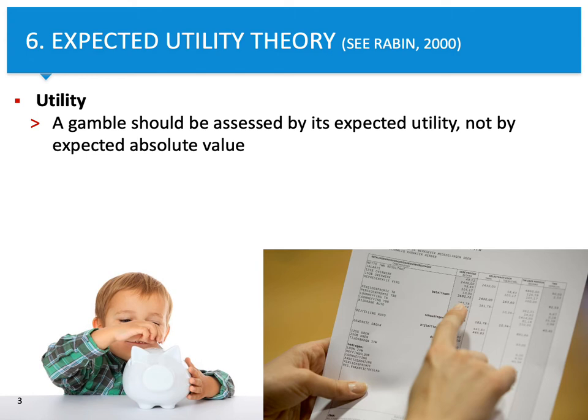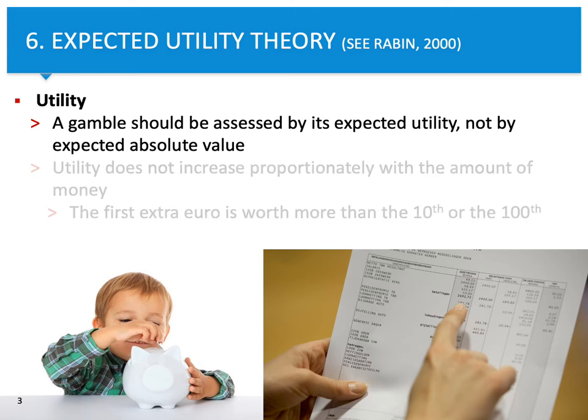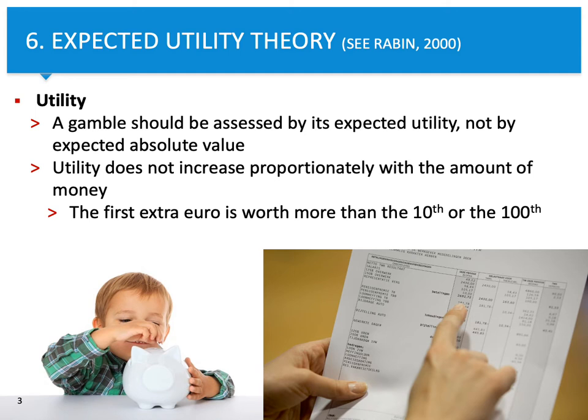When we consider gambles, we talk about expected utility, not absolute value. It's related to the fact that there are some specific differences in terms of utility between getting 1 euro or the 10th or the 100th. If you have nothing, getting 1 euro can more heavily increase utility than getting the next 10 or next 100. That's the way how it goes.